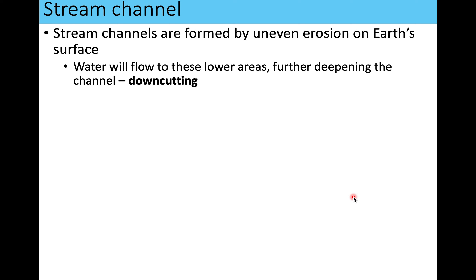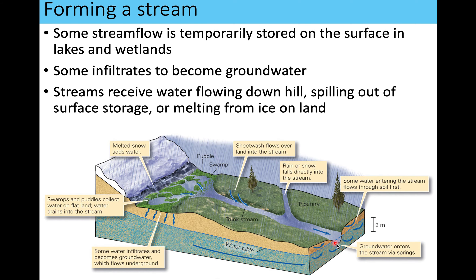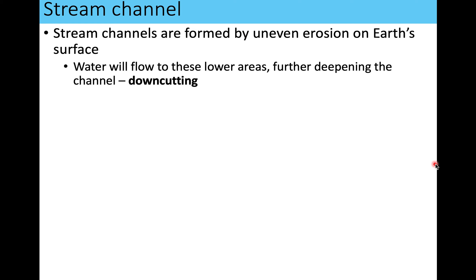A stream channel — the actual path that the stream is flowing in — is created by erosion on the surface, specifically uneven erosion. That certain spot where the stream ends up is eroded more than the land around it, so it is deeper cut, allowing water to fill that area. Water always wants to go to the area closest to sea level, so it accumulates where the surface is unevenly eroded.